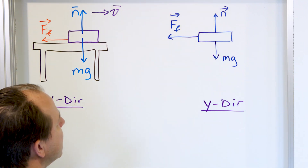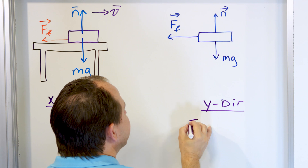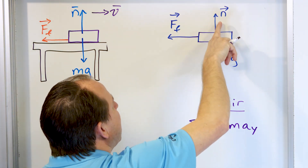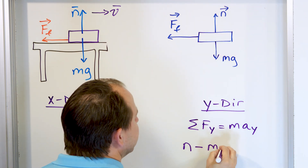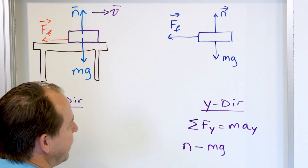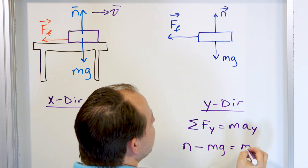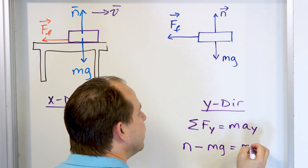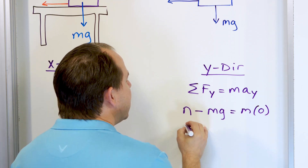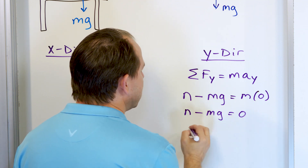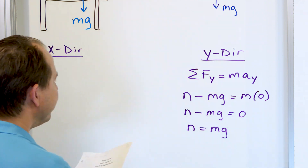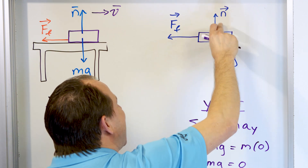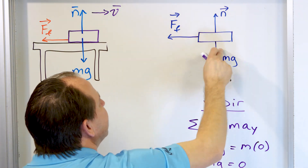Let's look at the y direction first. The sum of the forces in the y direction is equal to mass times acceleration in the y direction. Up is positive, down is negative, so we have N minus mg. This is the normal force minus gravity, negative because gravity is a downward acting force. The book is sliding horizontally, so there is no acceleration in the up-down direction — acceleration in y equals zero. Therefore N minus mg equals zero, meaning the normal force equals mg. The upward normal force must exactly balance the weight.